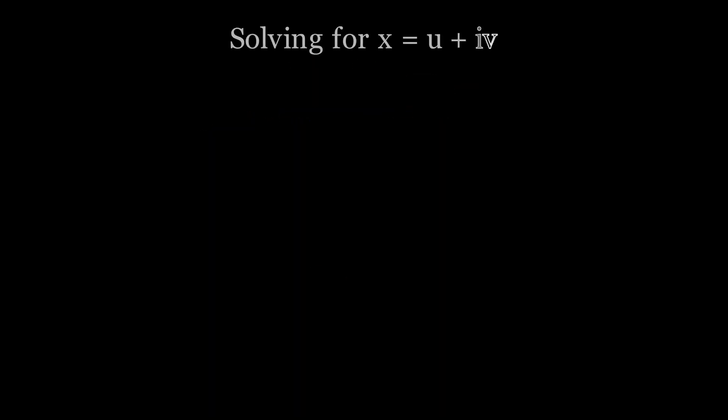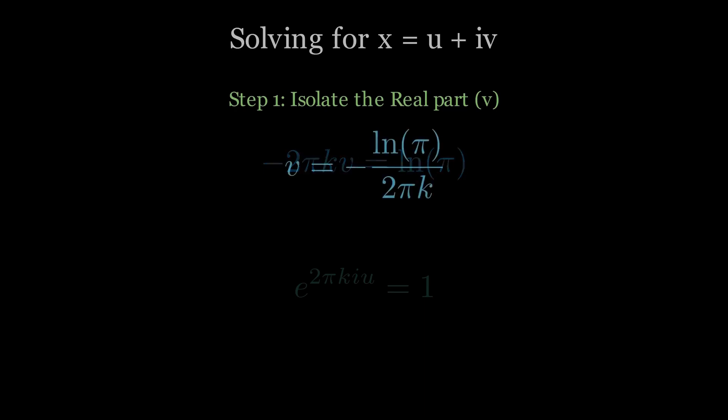Alright, now we solve for x. Recall the two conditions we split out. Magnitude e to the negative 2πkv equals π, and direction e to the 2πkiu equals 1. First, focus on the magnitude. Take the natural log of both sides, negative 2πkv equals ln of π. So v equals negative ln of π over 2πk.